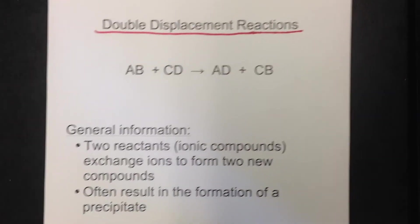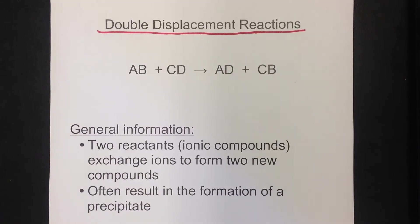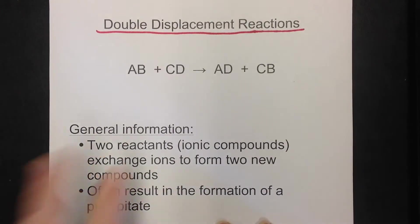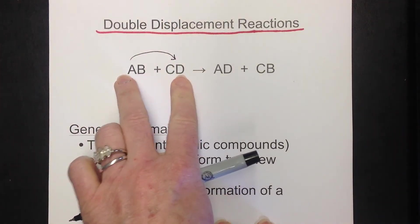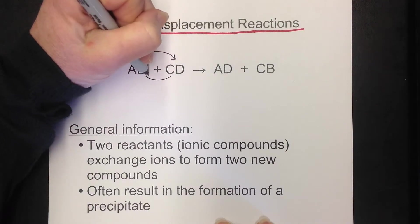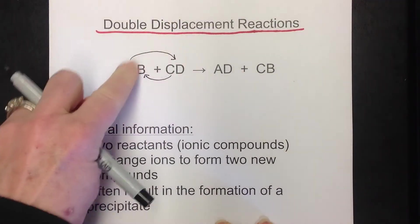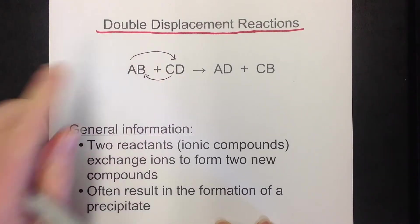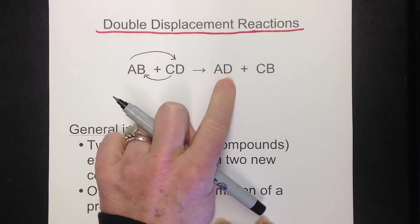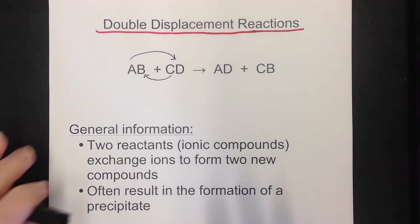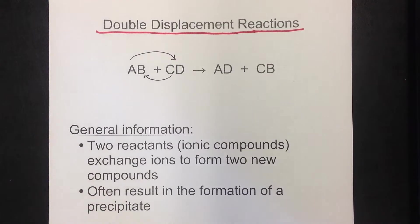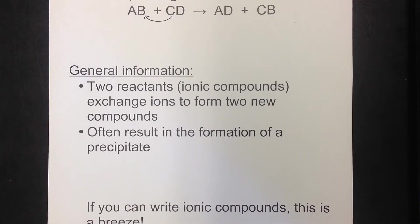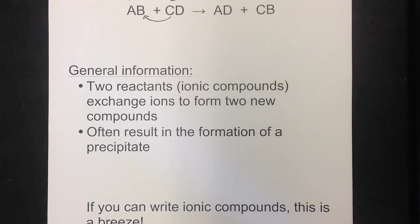Let's start our notes on double displacement reactions. You can see I have the general reaction written here. You have two ionic compounds, and they are literally going to switch ions. You'll put the two outers together — that's A and D — then put the two inner ones together. Going left to right on the outside and right to left on the inside, you'll always have the cation written first and the anion written second.